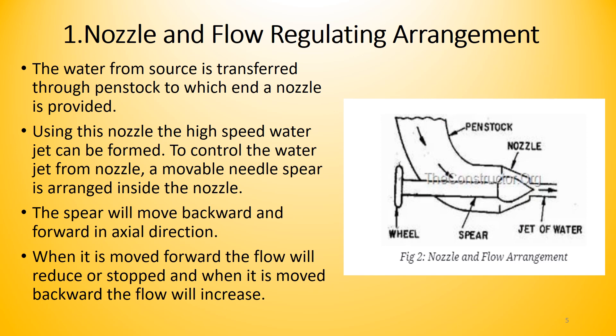The first part — nozzle and flow regulating arrangement — consists of the penstock, nozzle, and spear. Water from the source is transferred to the penstock, to which the nozzle is attached. The function of the nozzle is to generate a high-speed water jet. To control the water flow, a mobile needle called a spear is arranged inside the nozzle. The spear moves forward and backward in the axial direction: moving forward reduces or stops flow; moving backward increases flow.